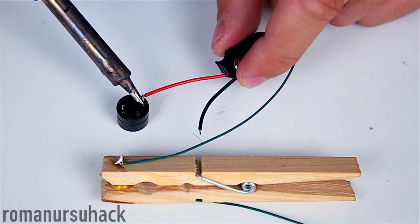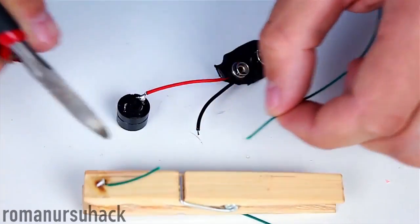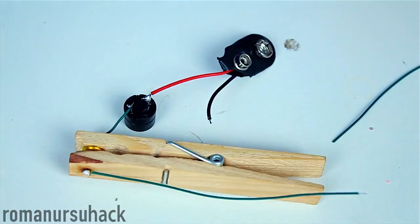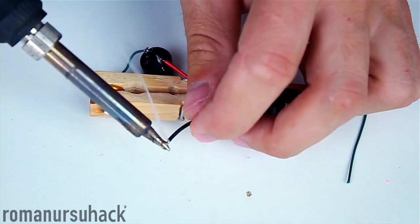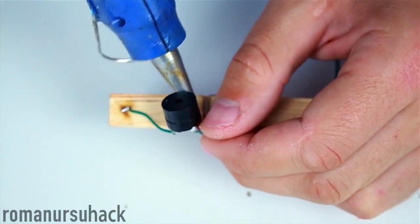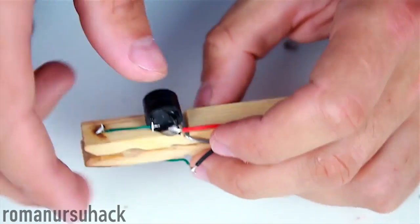Now let us solder the positive contact of the battery to the plus of the buzzer. Then solder the minus of the buzzer to any wire of the clothespin. Also solder the negative lid of the battery to the remaining wire of the clothespin.